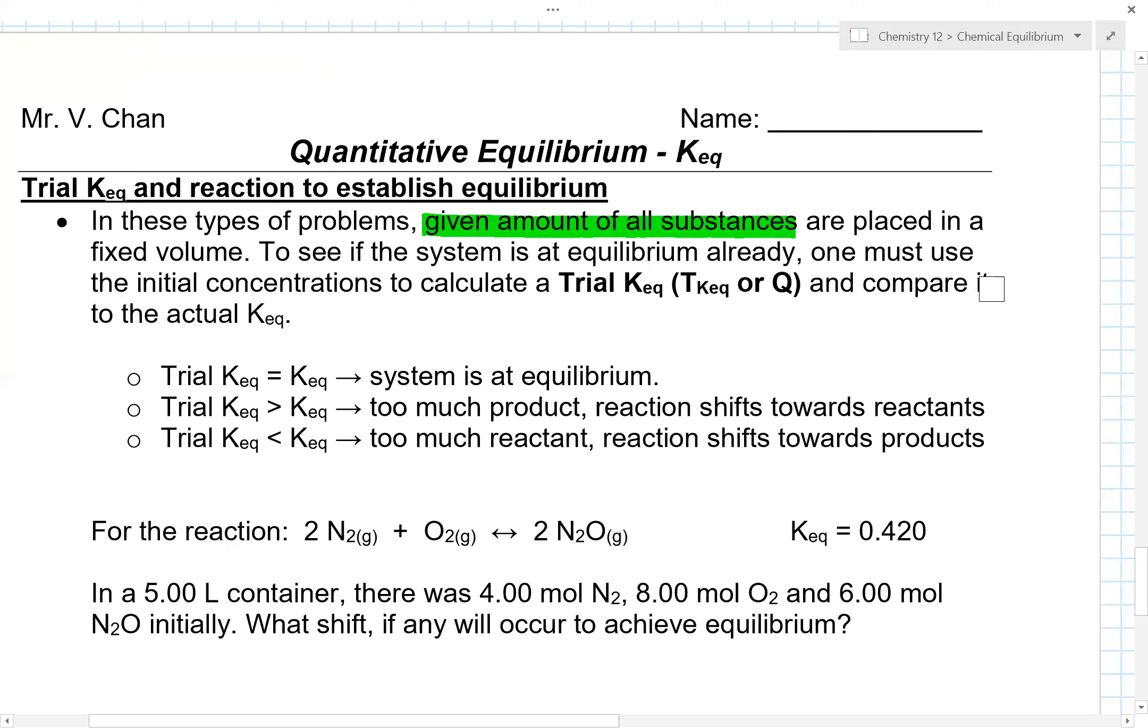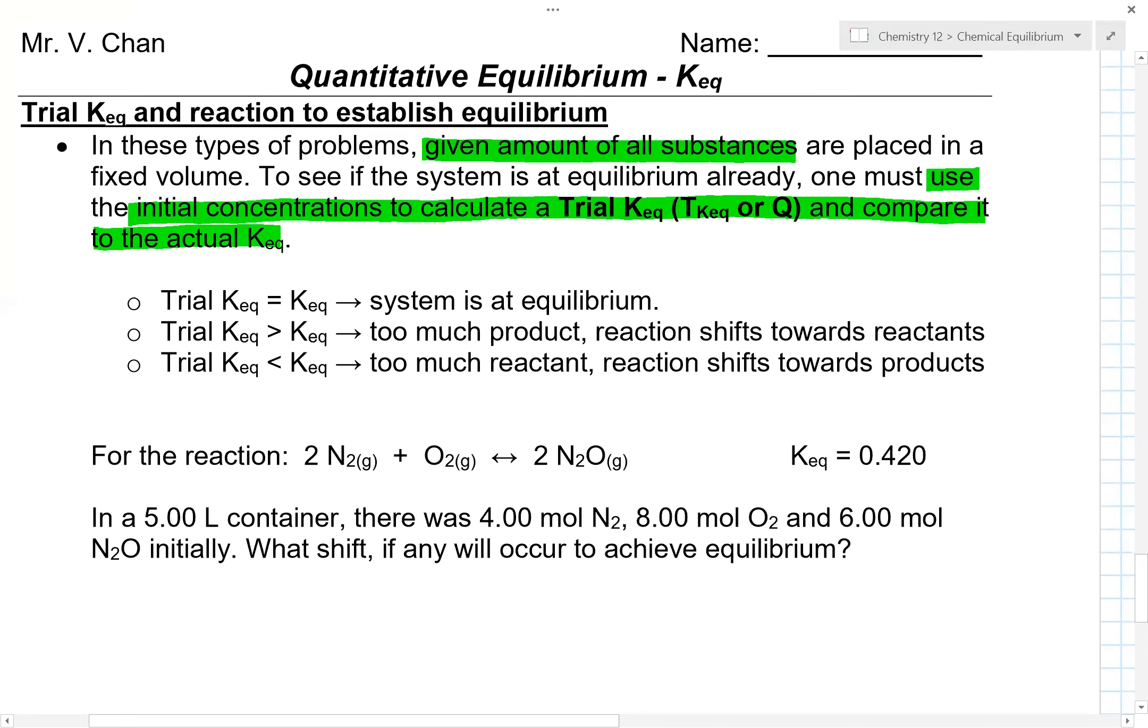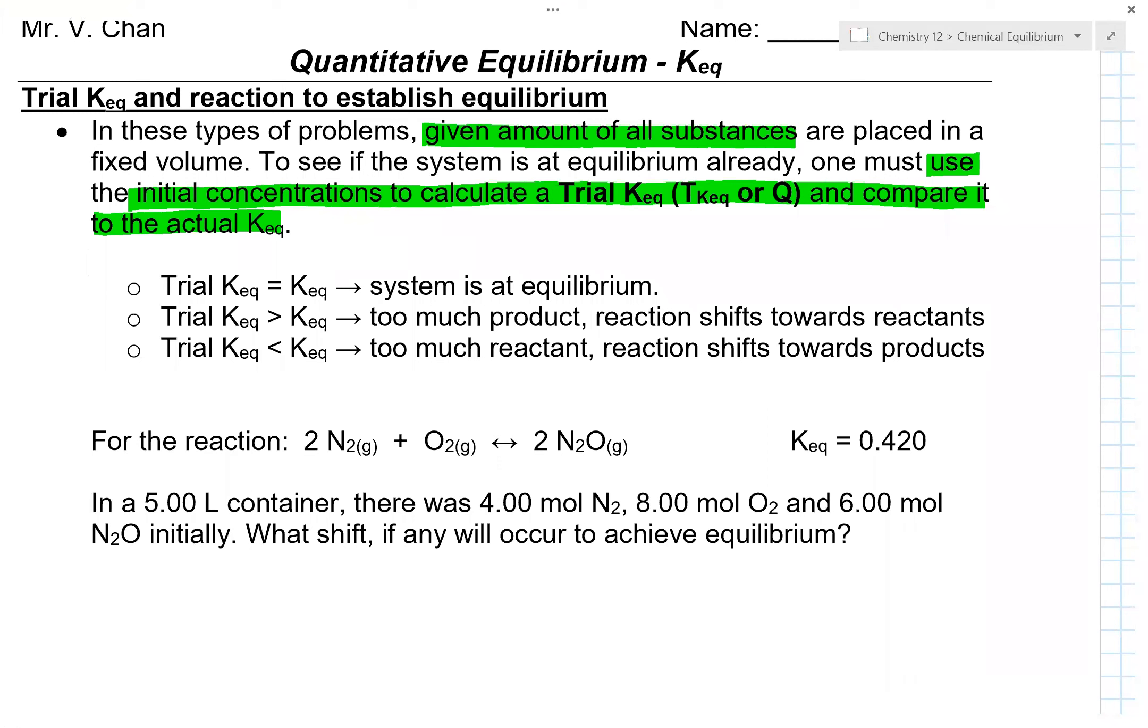To see if the system is at equilibrium already, one must use the initial concentrations to calculate a trial Keq, TKeq, or just Q, and compare it to the actual Keq. Now there are three conditions here: trial Keq is equal, trial Keq is greater than, or trial Keq is less than.